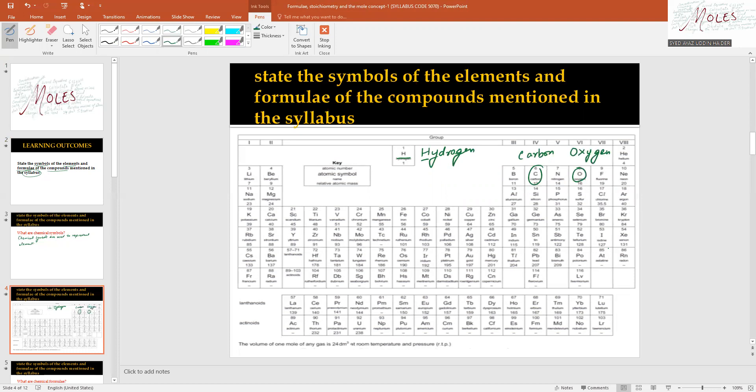Some symbols have two letters, such as Al for Aluminium. You must remember that the first letter is capital and the second letter is small.